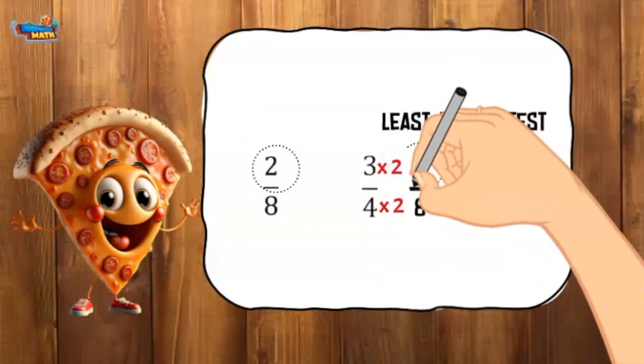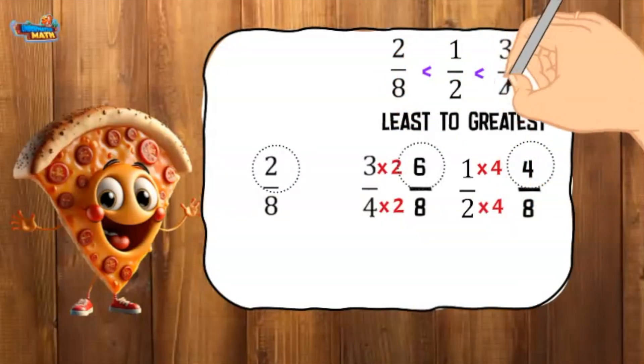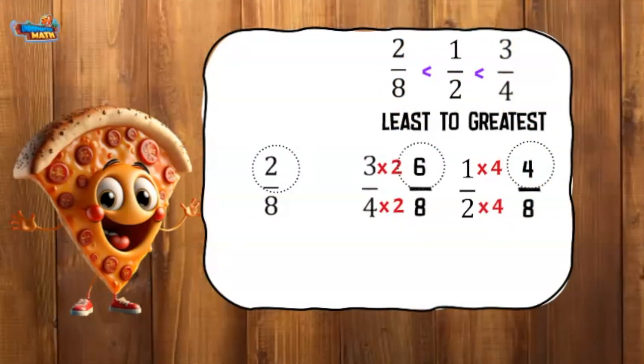Then we compare the numerators of the equivalent fractions. Finally, we put the fractions in order from least to greatest. It looks like this: two eighths, one half, three fourths.